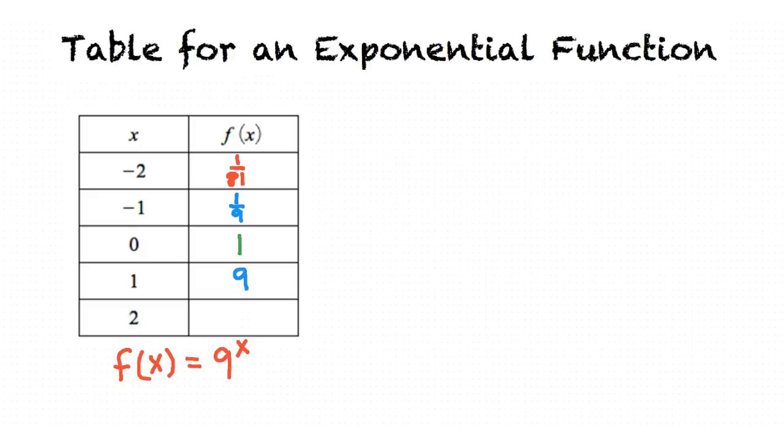That is correct. For the last number which is 2 we substitute in 2 for x in the equation which can be written as 9 squared which results in 81.